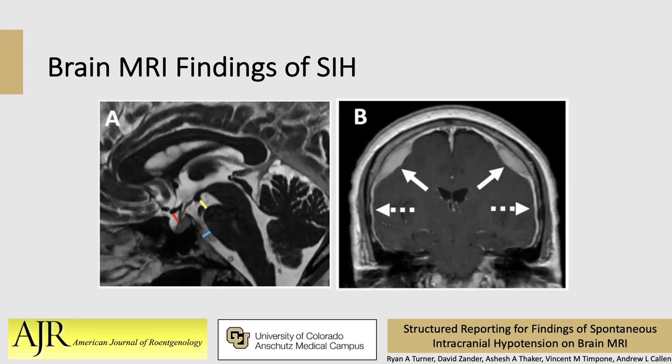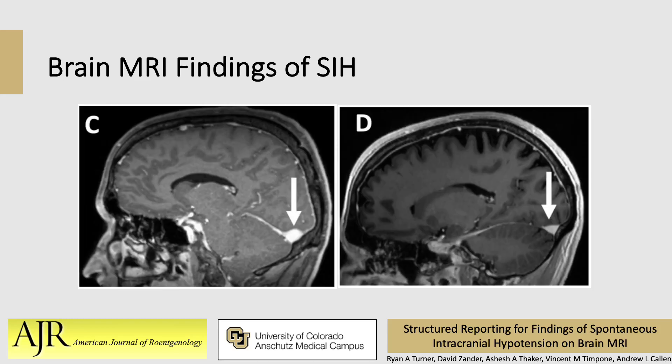To review imaging findings that can help evaluate SIH: image A shows normal appearance of supracellar distance shown by the red marker, memelopontine distance by the yellow marker, and prepontine cistern by the blue marker. Image B shows a patient with suspected SIH, the presence of subdural collection indicated by the solid arrows, and pachymeningeal enhancement by the dashed arrows. Image C shows an abnormally engorged transverse sinus with an upward convex superior margin, and image D shows the normal flat appearance of the transverse sinus.